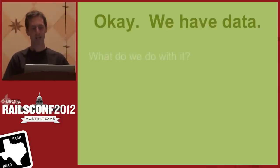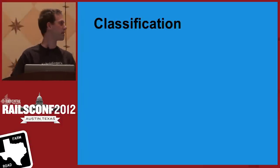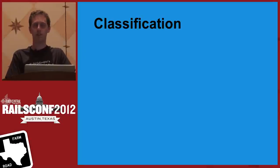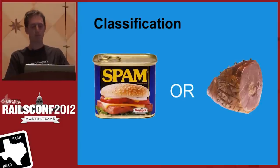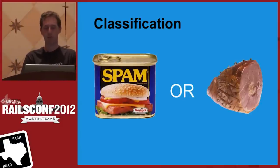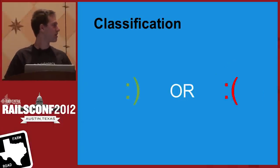So we have data — what do we do with it? We classify it. Classification is breaking things down into categories and, given some new data, trying to figure out which category it should fall into. Is it spam or ham? We want your inbox to be full of ham, not spam. Is it appropriate or inappropriate? Is it happy or sad?